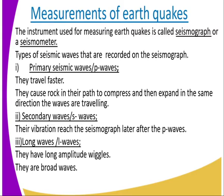When we talk about the primary seismic waves, they travel faster. That is the reason as to why they will reach the seismograph first. They cause rock in their path to compress and expand in the same direction the waves are traveling.